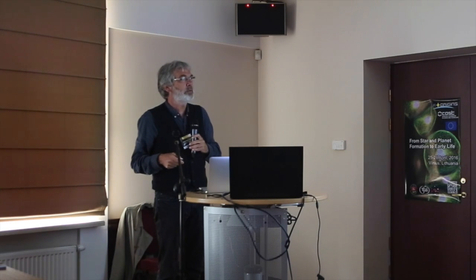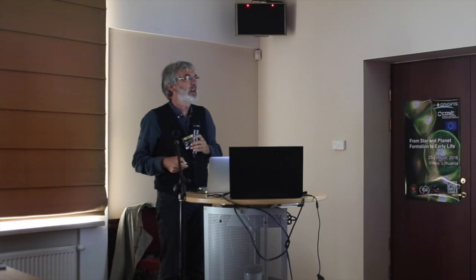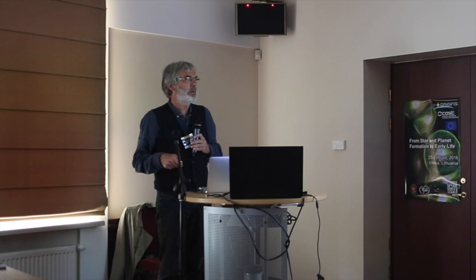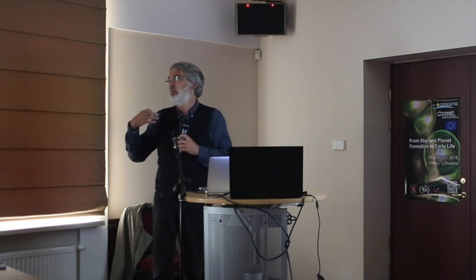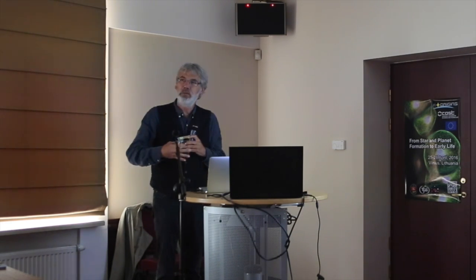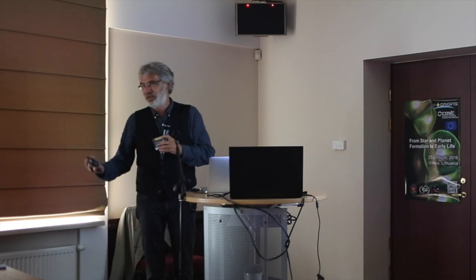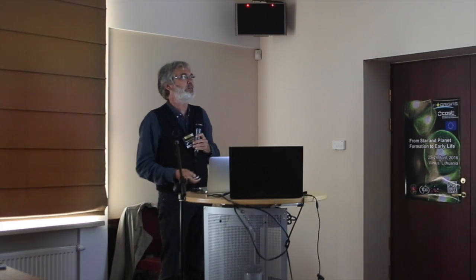I'll start out talking about gene duplications and deep molecular phylogenies, then a bit about properties of the last universal common ancestor, a little aside on the history of the translation machinery. In the main part I try to convince you that there is a record of major catastrophic events that happened early in the evolution of life, and I'll correlate those to things that might have happened on this planet. I end with a tale of caution about not taking dating attempts in the literature too seriously, because you often get back what you put in.